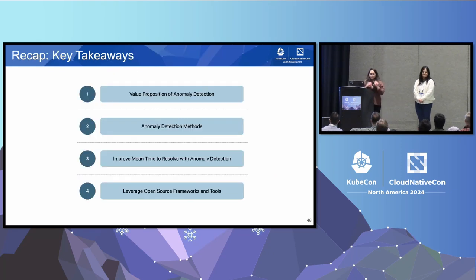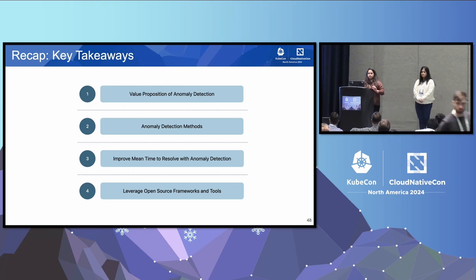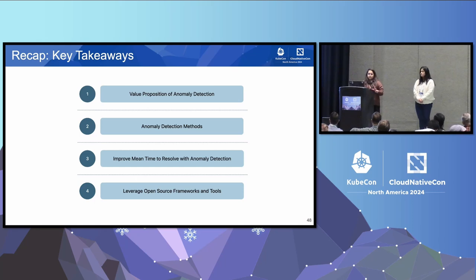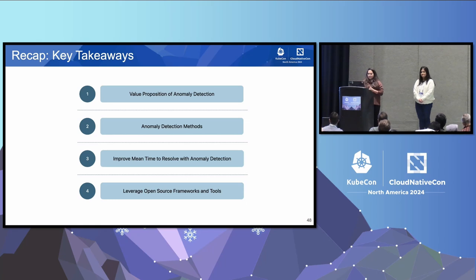As promised, we spoke about the value proposition of anomaly detection, some statistical and machine learning methods for anomaly detection, how you can improve mean time to resolve by enhancing anomaly detection to indicate root causes, and how to leverage open source frameworks like Kubeflow and KServe to build your anomaly detection pipeline. Today we explored leveraging anomaly detection for SLA breach detection and root cause detection. We're not being prescriptive — this is one of the ways you can implement this. We hope this talk sparked new ideas for your future projects. Now we'll open it up to questions.